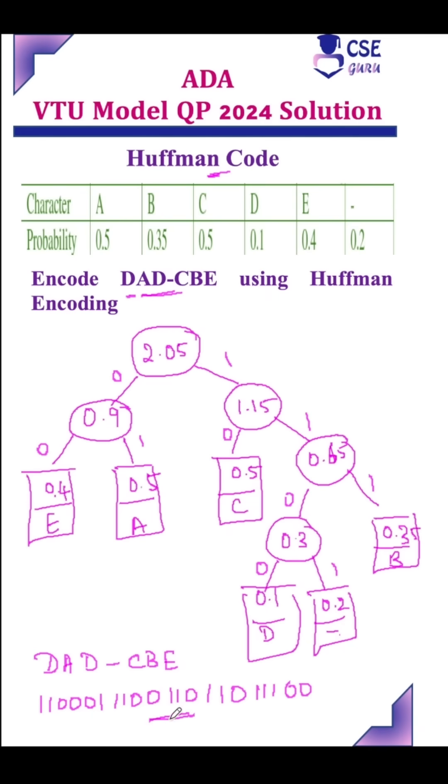The encoded value for DAD-CBE is 1100, 01, 1100, 1100, 1100. So this is the Huffman code for the text given DAD-CBE.